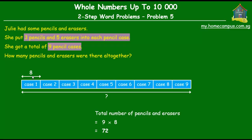So that's equal to nine times eight, which is 72. So there were a total of 72 items altogether. And the items in this case are pencils and erasers. So there were 72 pencils and erasers altogether.